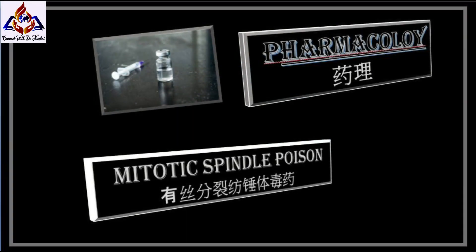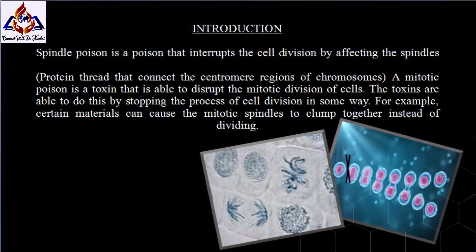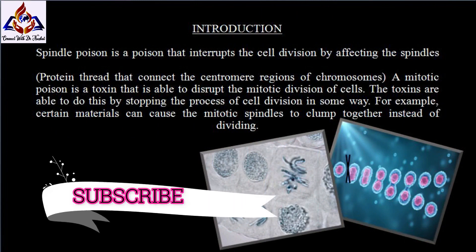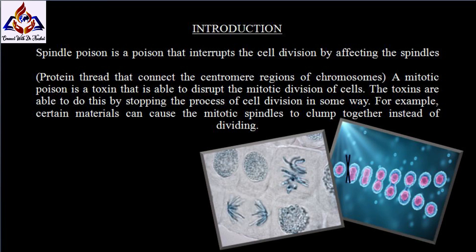Our topic is mitotic spindle poison. A mitotic poison is a toxin that is able to disrupt the mitotic division of cells. The toxins are able to do this by stopping the process of cell division in some way. For example, certain materials can cause the mitotic spindles to clump together instead of dividing.